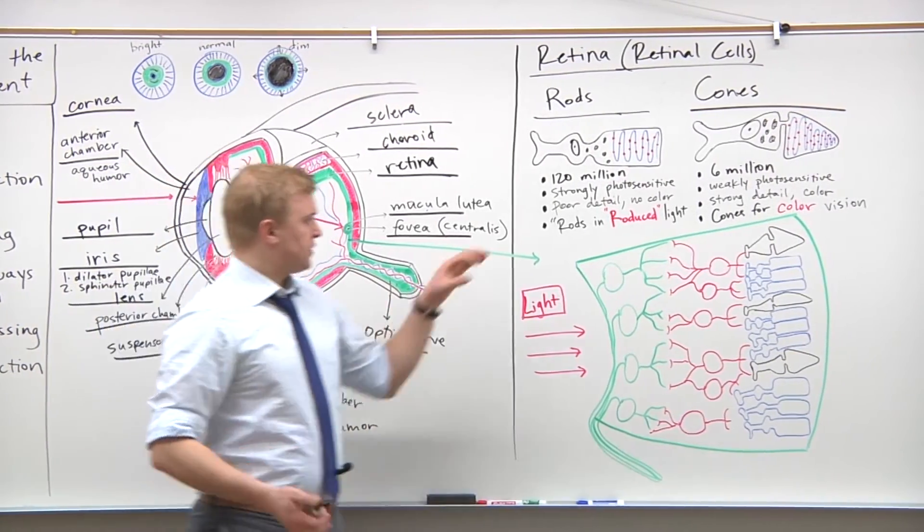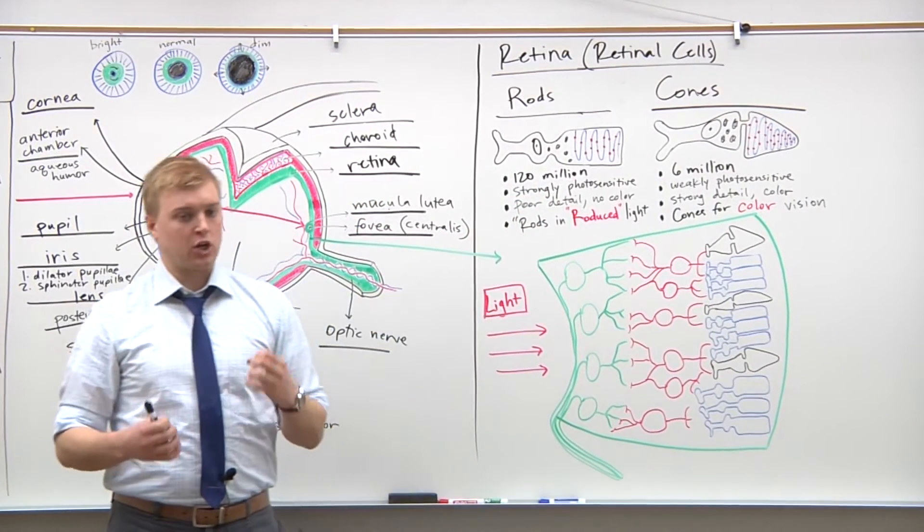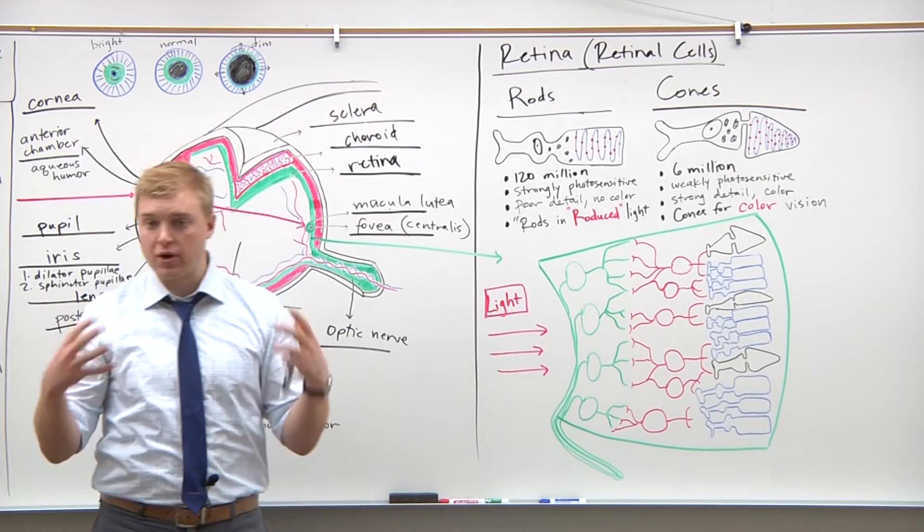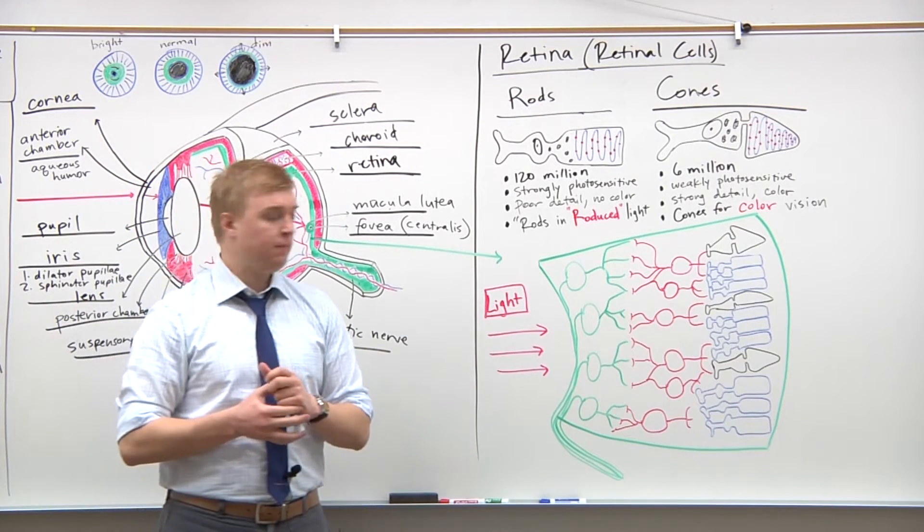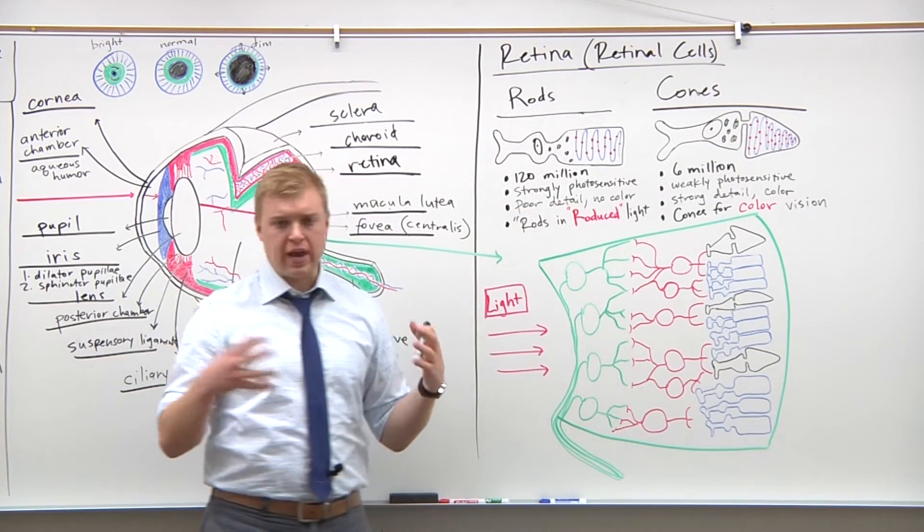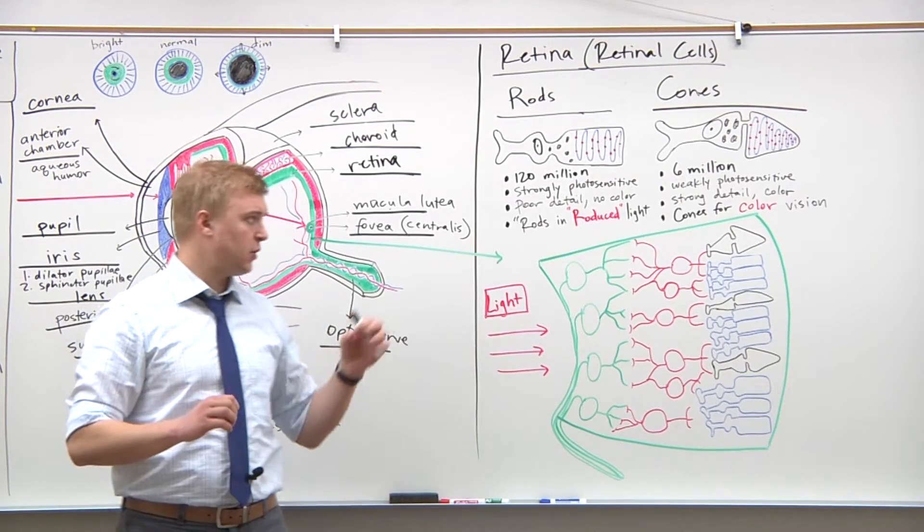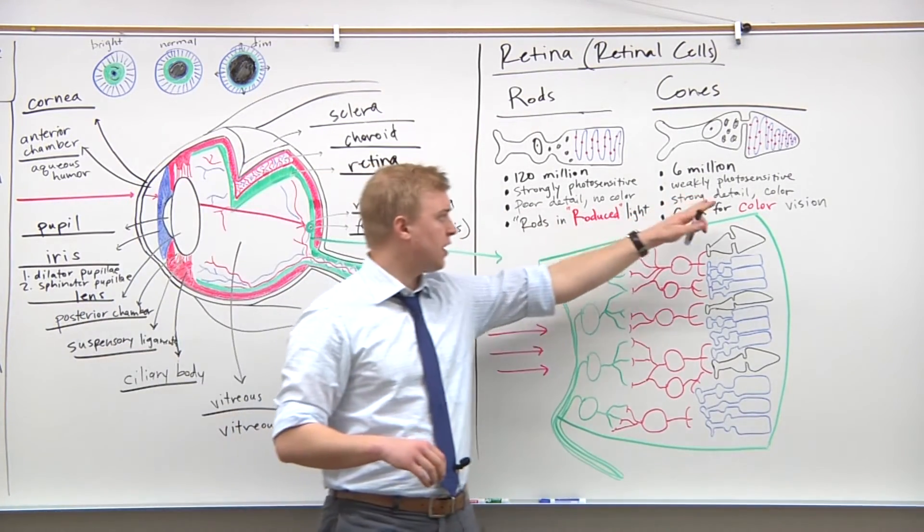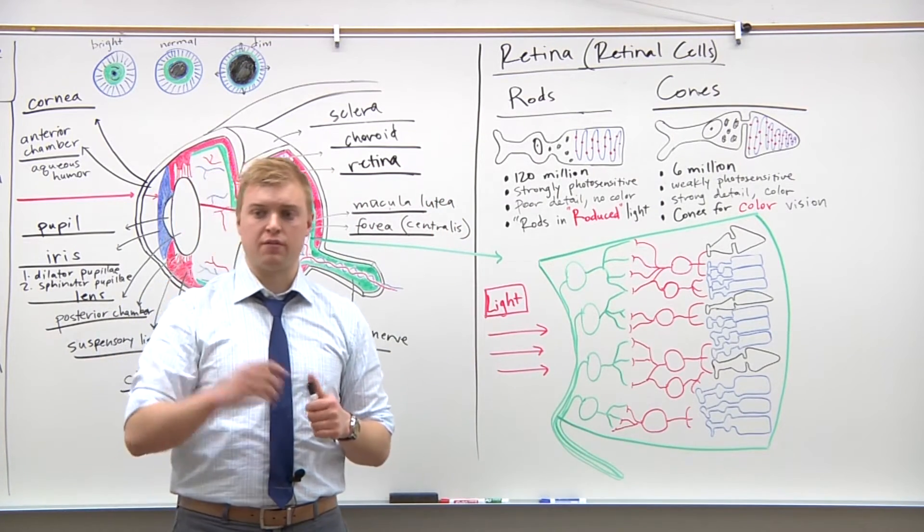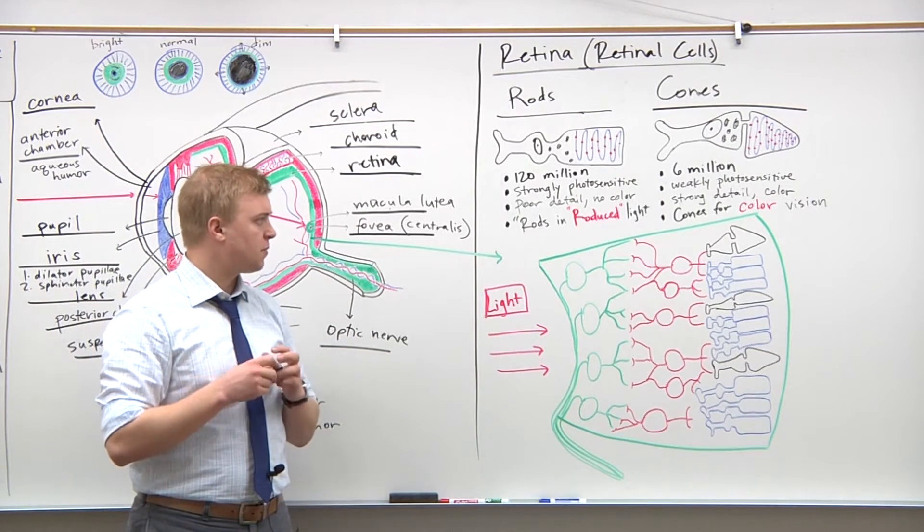A couple other differences here. Rods are going to be much more photosensitive than cones are—about a thousand times more photosensitive just to the presence of light. But what we lose there is we can't detect color and we can't detect very fine details. That's going to be done with the cones, which have very strong color vision and allow you to focus on the very specific details of an image or an object.